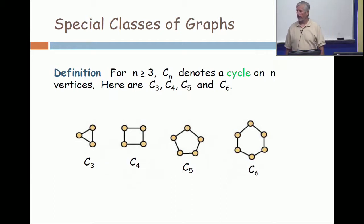Alright, some special classes of graphs. For n greater than or equal to 3, Cn denotes a cycle on n vertices.